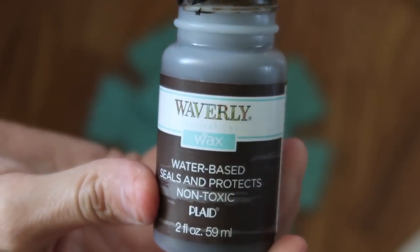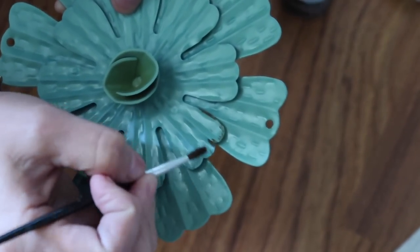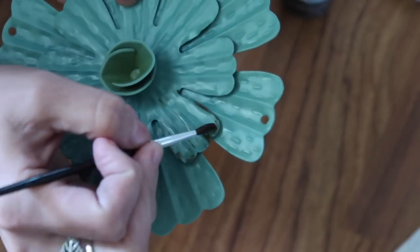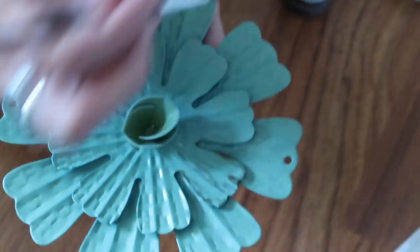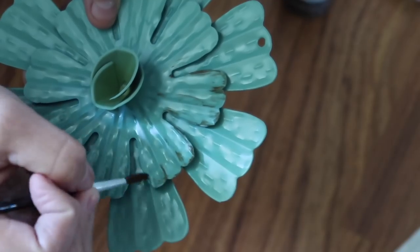I'm definitely a big multitasker when it comes to crafting because I don't like waiting for paint to dry. So while the paint was drying on the sign I went back in with my flower since that was completely dry and I just used this antique wax by Waverly and I just kind of went all along the edges of the flower to make it look a little more distressed, a little more rustic.